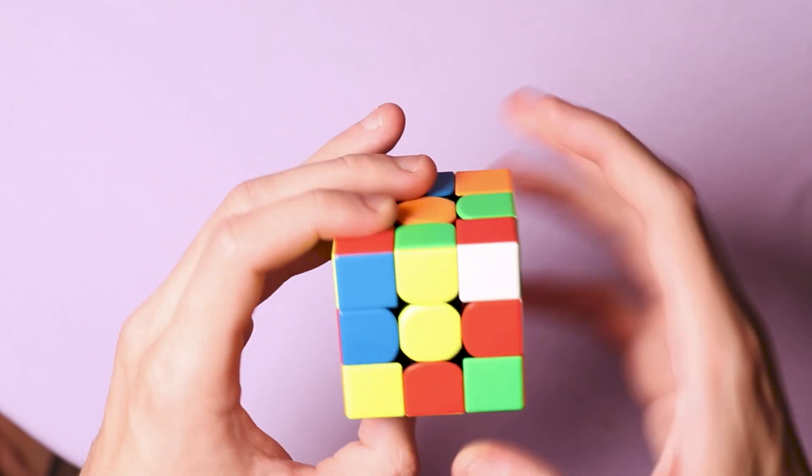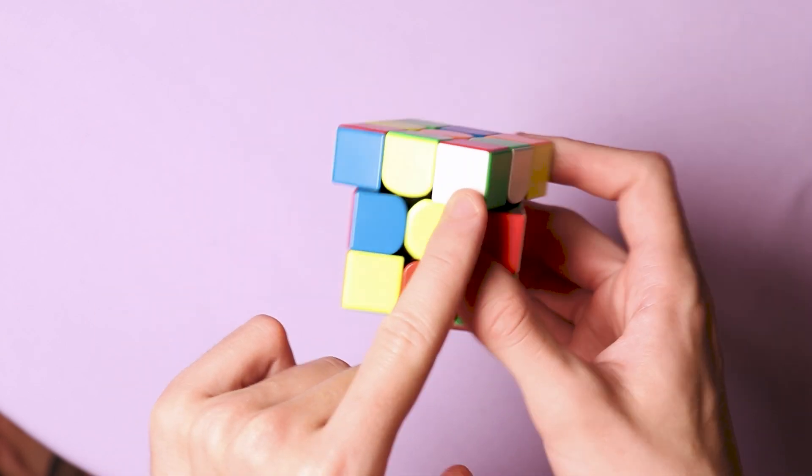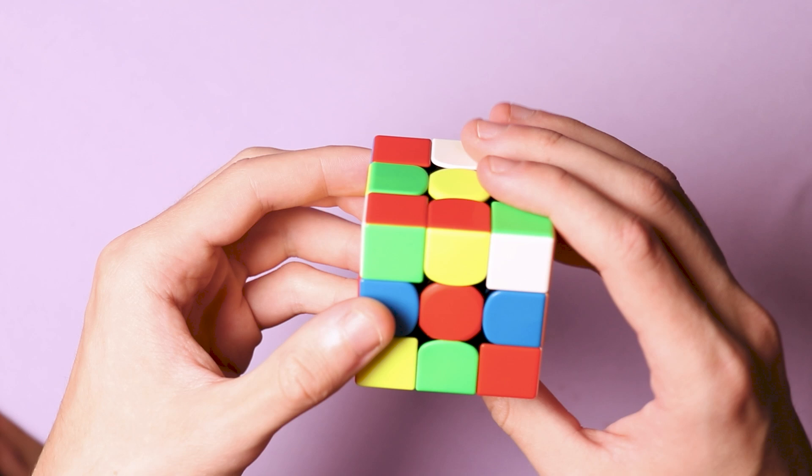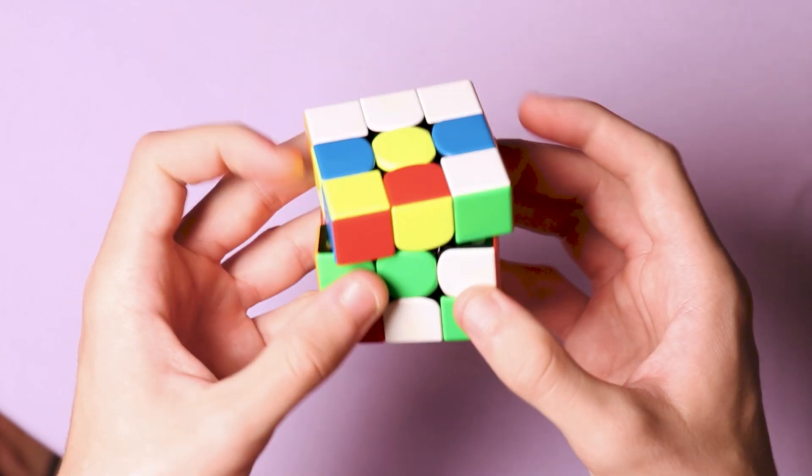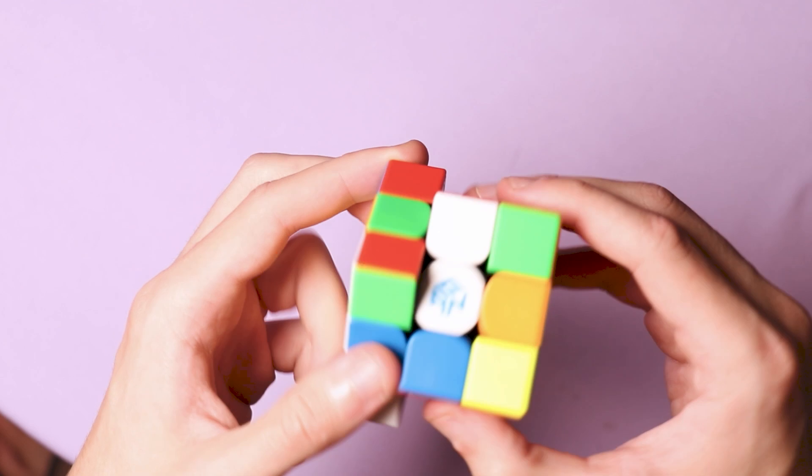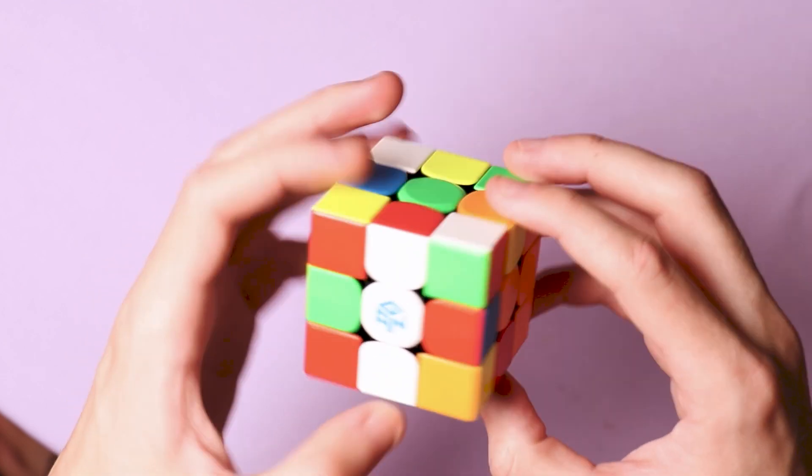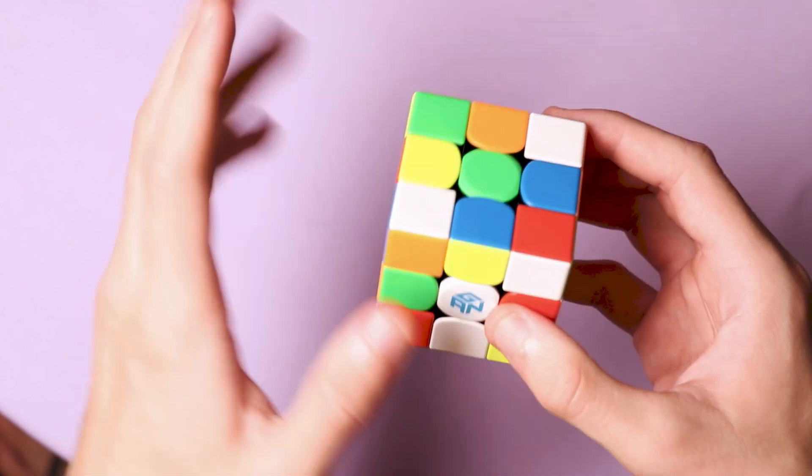Then there's the corner pieces which also go from corner to corner. Watch this piece as I rotate it from place to place and from side to side. It always stays on the corner but flips to different directions. And that's the basis.